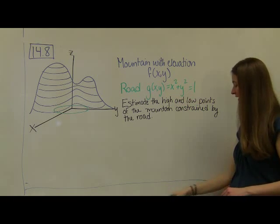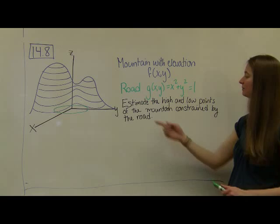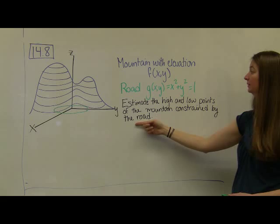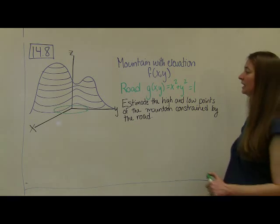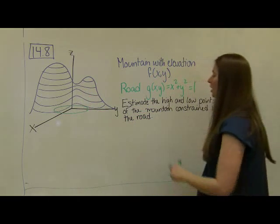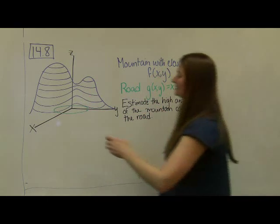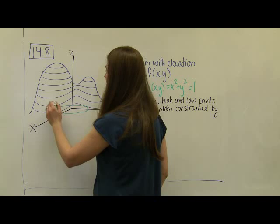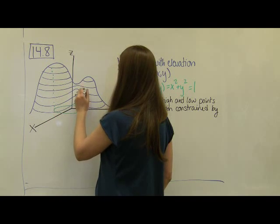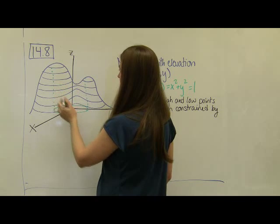The question we're asking is, we want to estimate the high and low points of the mountain constrained by the road. We aren't interested in the very highest or lowest point on the mountain. We want to know, as this road travels along the mountain, what are the high and low points of this road?